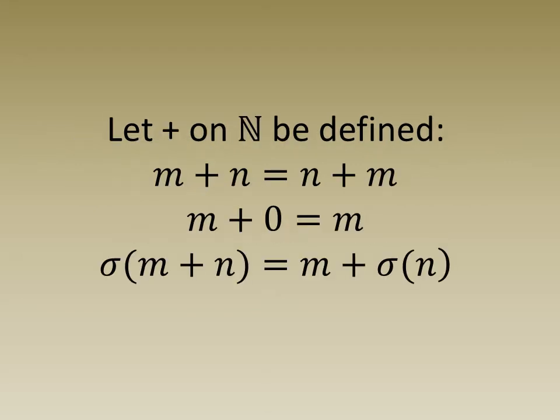First, let addition be commutative. Secondly, let zero be the identity of addition. Thirdly, let the successor of m plus n be equal to m plus the successor of n.